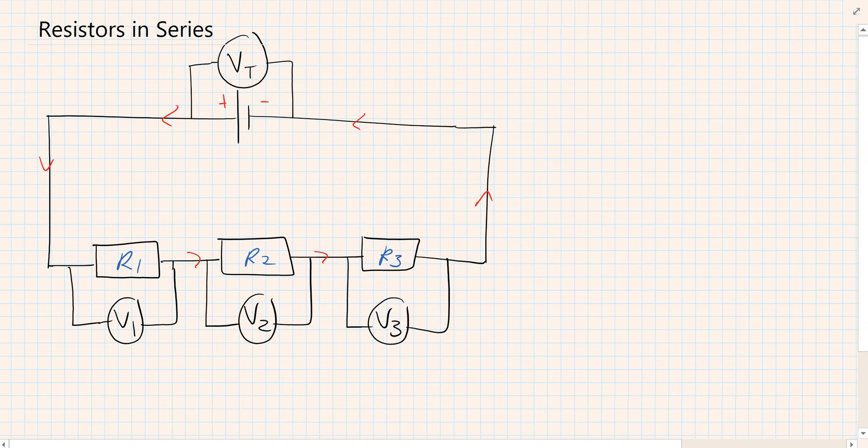In a series circuit, the charges drop energy across each resistor. We therefore know that the voltage, which is the energy per charge, the total voltage must equal V1 plus V2 plus V3. So voltage is shared.